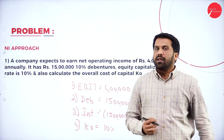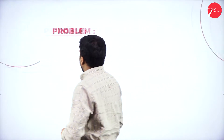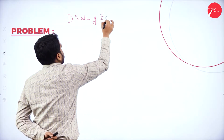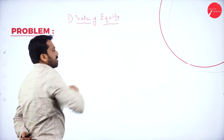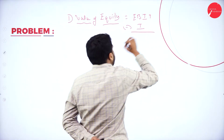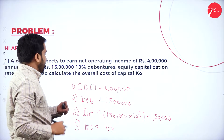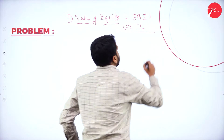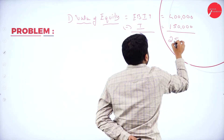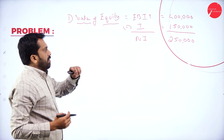We are supposed to find out value of equity, value of the firm, and cost of equity — these three things. Now I will go one by one. The first thing is value of equity. The formula is EBIT minus interest. EBIT in this problem is 4 lakh and interest is 1 lakh 50,000. So we get 2 lakh 50,000, which we call net income or NI.